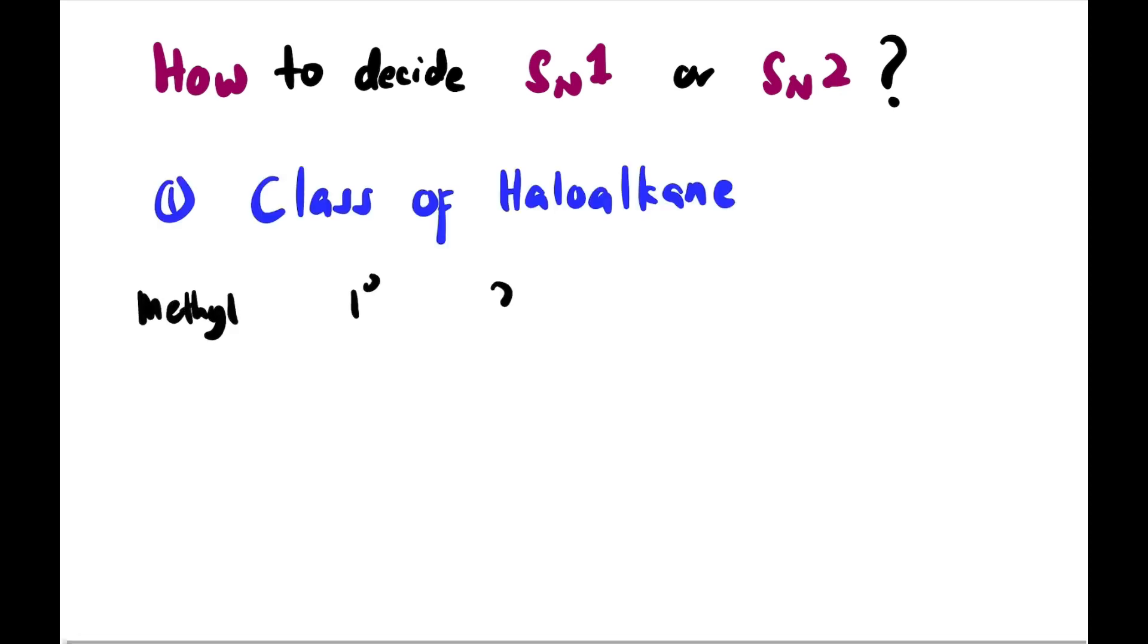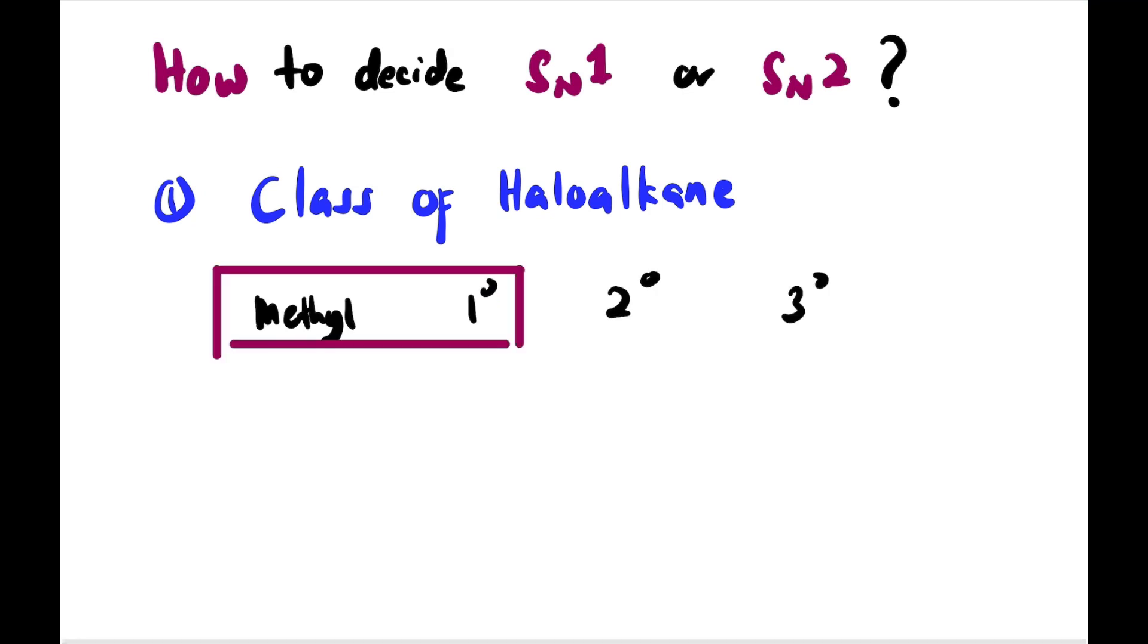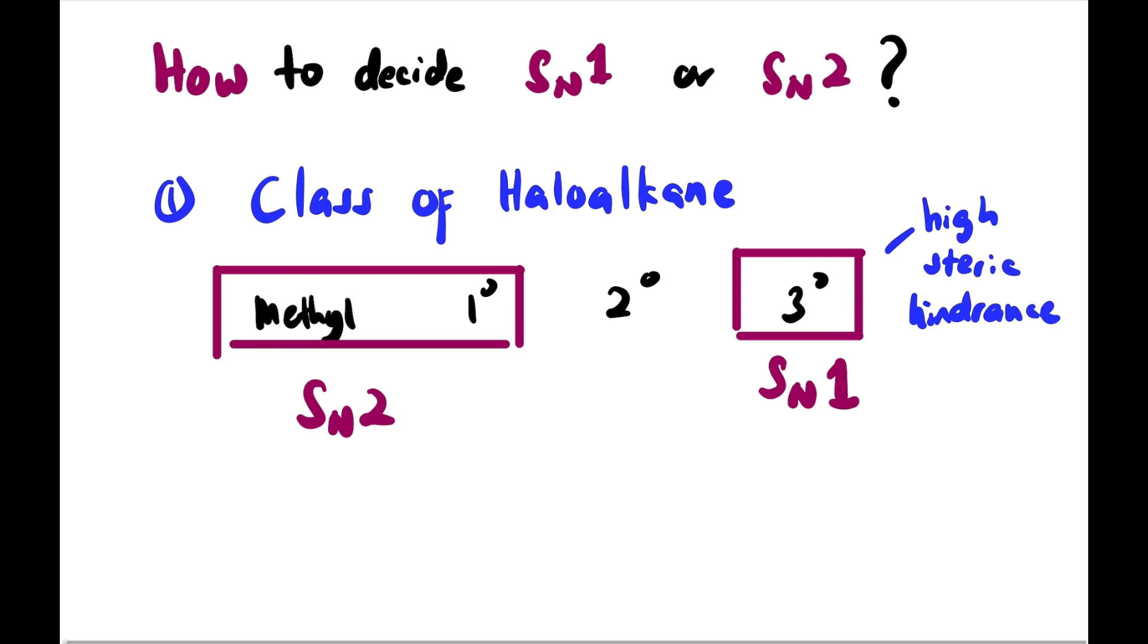First factor we look at is class of haloalkane. We have methyl, primary, secondary, and tertiary. Methyl and primary will favor SN2, while tertiary will favor SN1. Why is that? Because tertiary has high steric hindrance, so it needs to happen step by step. There are many obstructions. SN2 has low steric hindrance, so it's easy to attack, easy to do it all at once. So it will form the activated complex at once.